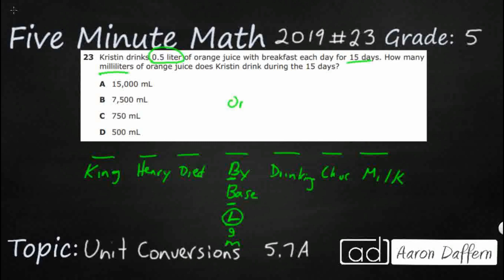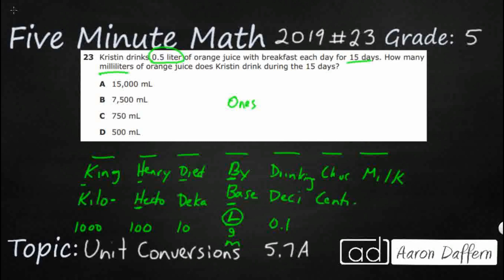Think of this as a place value system, with the base unit as the ones place. Then we start building our prefixes: King stands for kilo — that's the thousands place. H stands for hecto — that's hundreds. The first D in 'died' is deca — that's the tens place. The base unit is our ones place. 'Drinking' is deci — that's the tenths place. C is centi — the hundredths place; it takes 100 centiliters to make one liter. And finally, M is milli — the prefix that means thousandths.